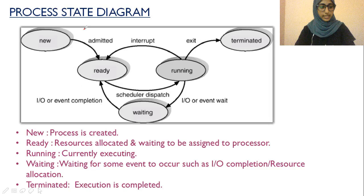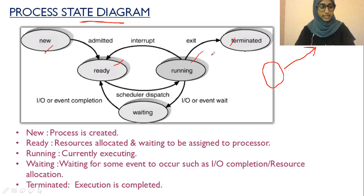Next, we have the process state diagram, also called the process life cycle. When a process is created, it goes through many states. There are five major states: new, ready, running, terminated, and waiting.